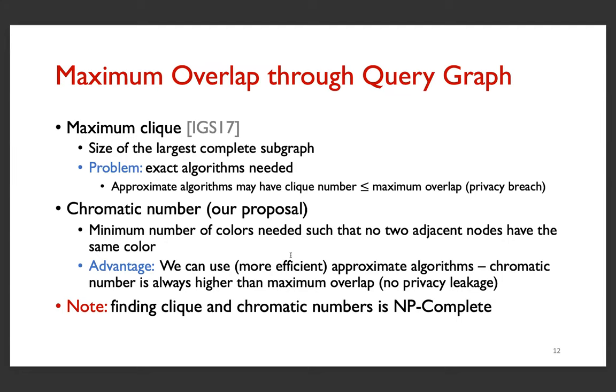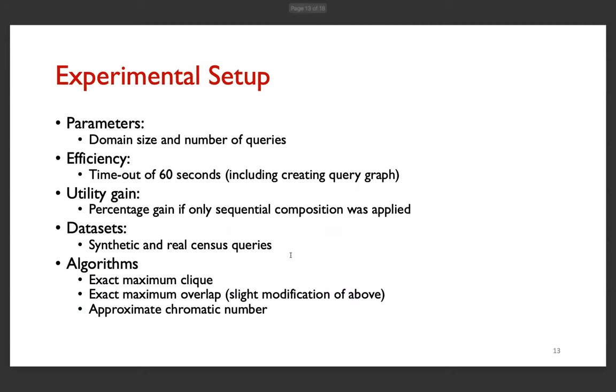Even though these two problems are still NP-complete, they have been studied very extensively, and hence the algorithms might be efficient in practice. So in order to check that, we have our experimental setup. We are checking the efficiency of the algorithms in terms of two parameters, in general the domain size and the number of queries. We also have a timeout, because we are looking at online mechanisms. Any query that takes more than 60 seconds is considered to have failed. In order to test utility, we look at the percentage gain if only sequential composition was applied, and we have both synthetic and real census queries.